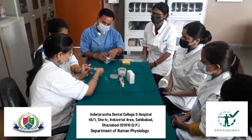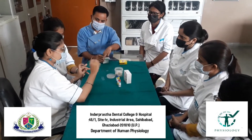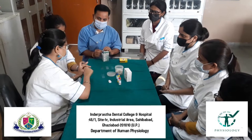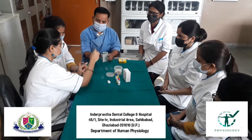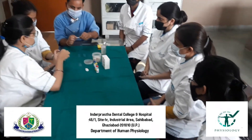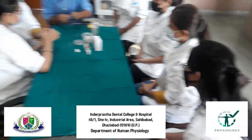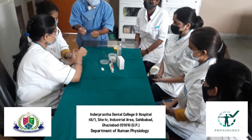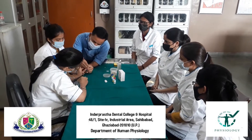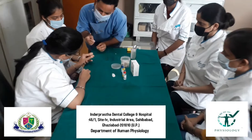Here we will demonstrate the blood group identification of a patient. In blood group identification, at first the patient's finger is cleaned with ethyl alcohol properly. After that, the patient's finger is pricked with a lancet.